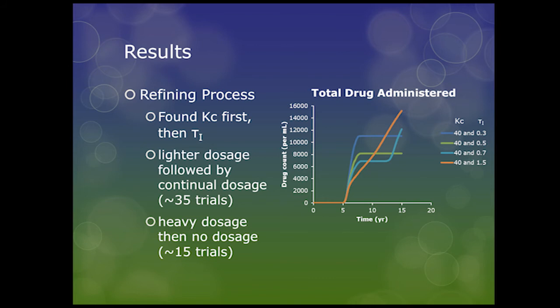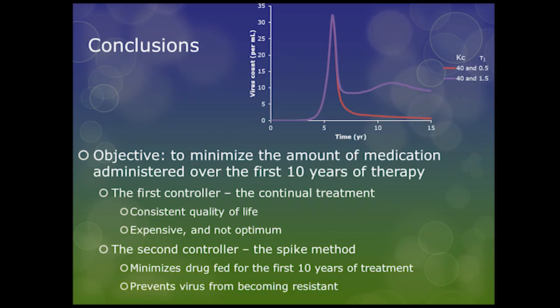Our objective was to minimize the amount of medication administered during the first 10 years of treatment. During the first five years the patient contracts the virus and it rises to the detectable level of 10 viruses per milliliter of blood, at which point we would begin treatment. Of the two controllers we developed, the first is the spike method, where you give a little more drug to beat the virus below the detectable level and keep the patient in good health for about 10 years.